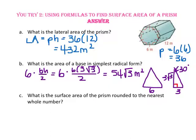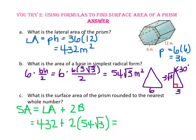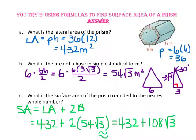For part C, what is the surface area of the prism rounded to the nearest whole number? Surface area equals lateral area plus two times the area of the base. The lateral area is 432 square meters and the area of one base is 54 radical three square meters. This gives us 432 plus 108 radical three, which using a calculator is approximately 619 square meters.